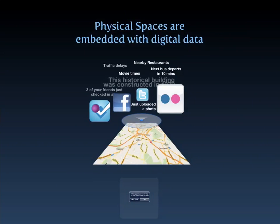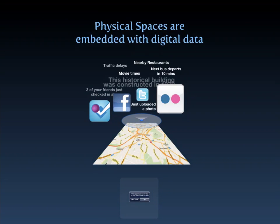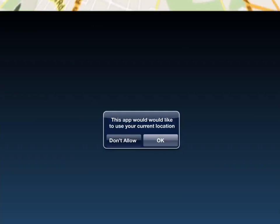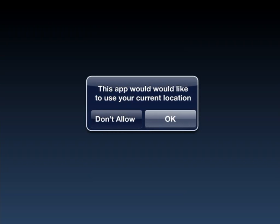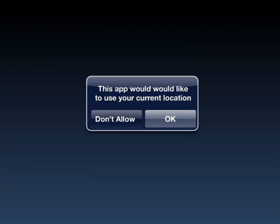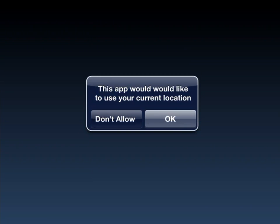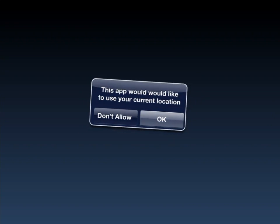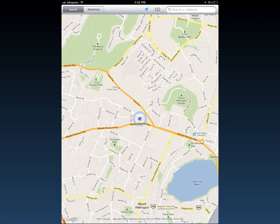By embedding spaces with digital data we can utilize the inherent power of location awareness. Location has become a big part of how we interact with digital data — many apps you launch now prompt you for your location. Even though the reason might not be immediately apparent, what it is trying to say is that by knowing your physical location it will affect what information is presented to you. When we talk about location, there are several ways we've come to understand it, the most obvious being your point on a map.